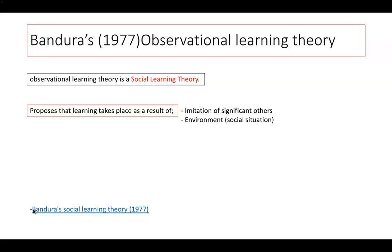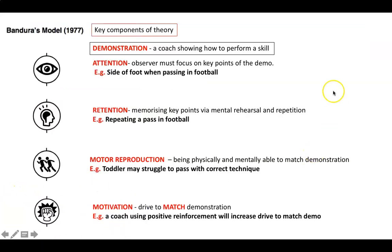Observational learning theory proposes that learning takes place as a result of imitation of significant others and the environment we're in. When teaching skills, it is a demonstration process that is particularly important. Bandura's 1977 model has key components — copying and modeling can affect our performance through four processes.